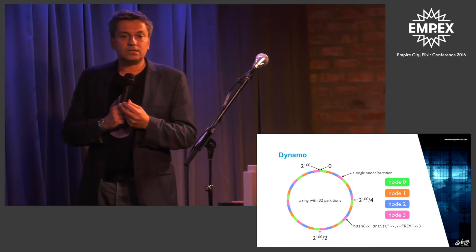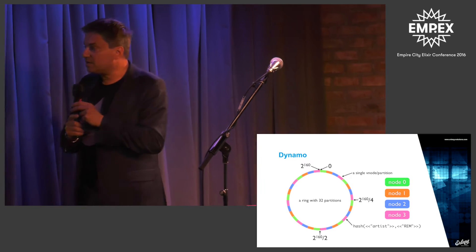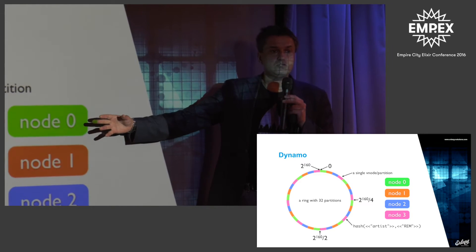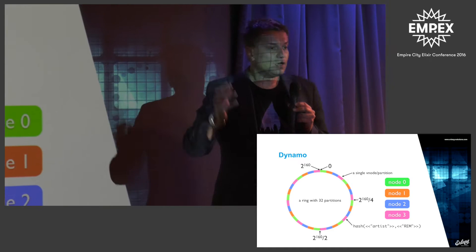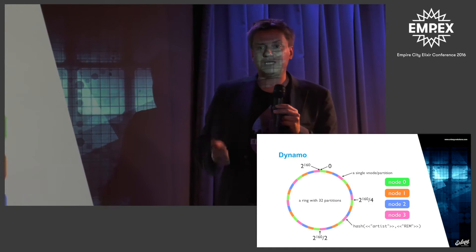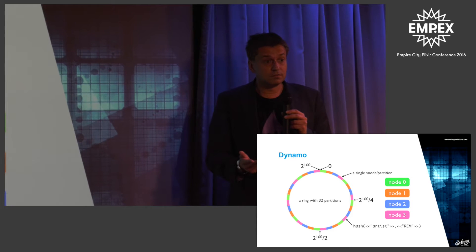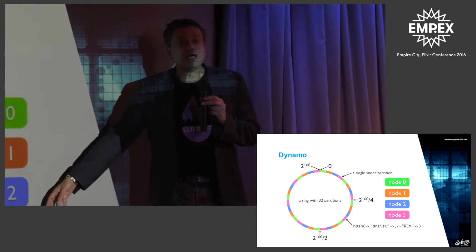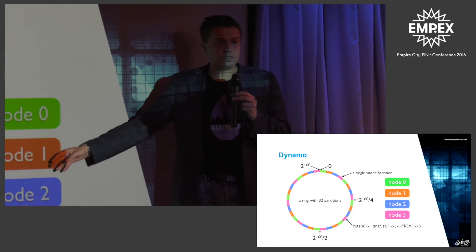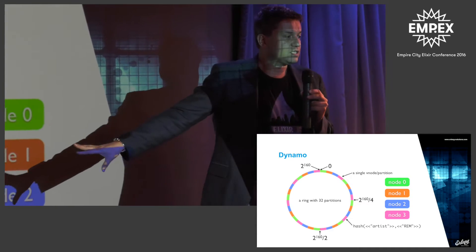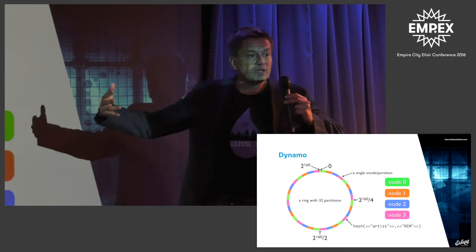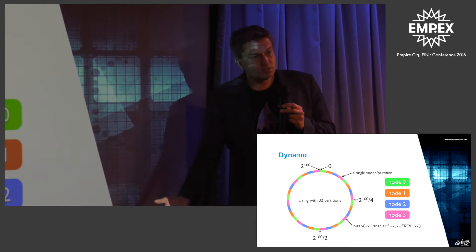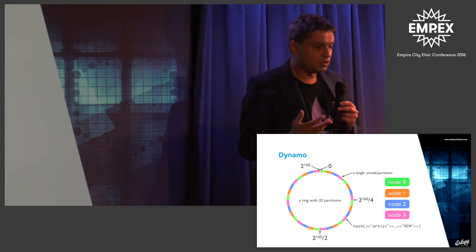You'll also get the gossip protocol. What happens is you'll get network partitions between nodes. As soon as you've got two nodes, you need a network between them. The only thing you can be certain of — alongside taxes and death — is that your network will fail. If your network fails, you've got the split-brain problem. As soon as the network comes back up, it gives you something called eventual consistency, so the data will eventually merge back and become consistent. If it fails at becoming consistent, you get back two values and need to deal with it in your business logic.